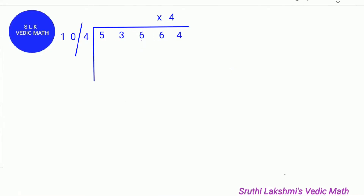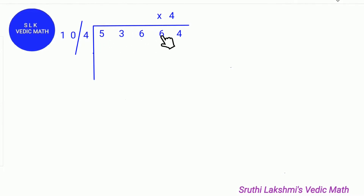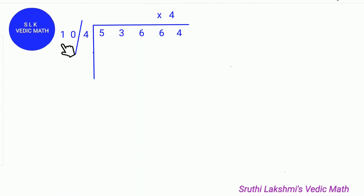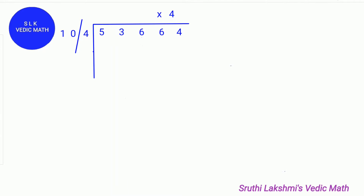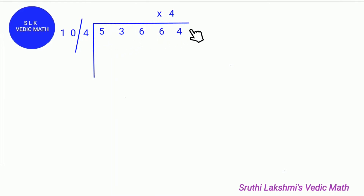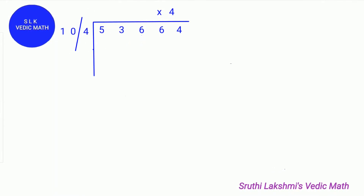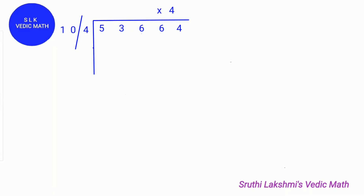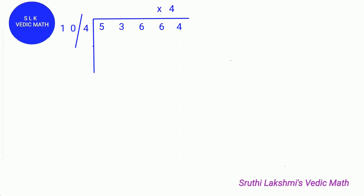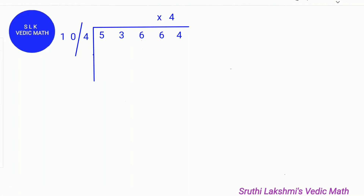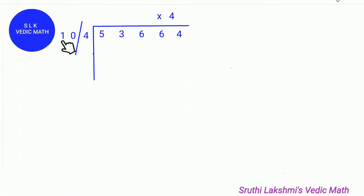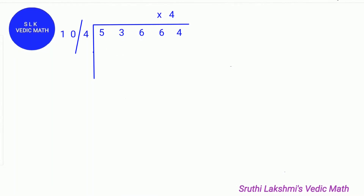Let's see another example. In this example the dividend is 53664 and the divisor is 104. To divide 53664 by 104, first put a slash separating the last digit 4 from the rest of the digits. We multiply 4 with the last digit of the quotient and divide it by 10. Isn't it easy? We do not need to remember the 104 tables.